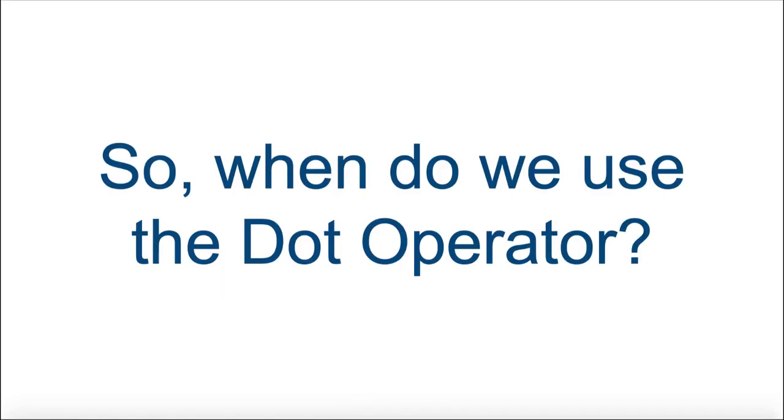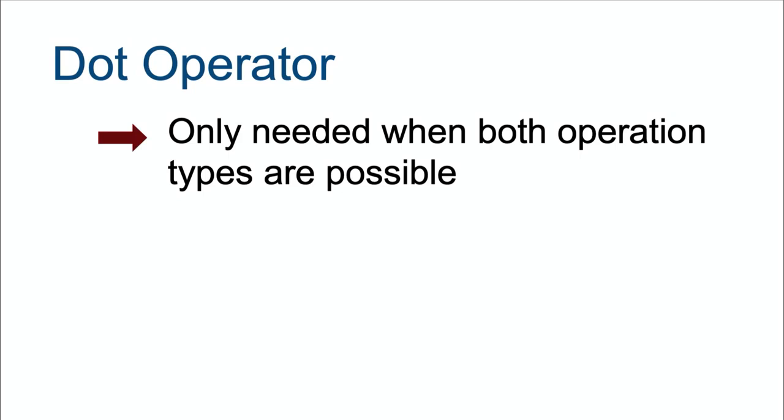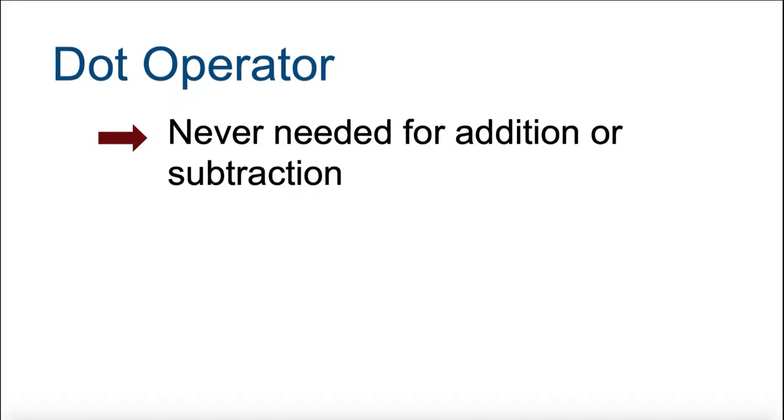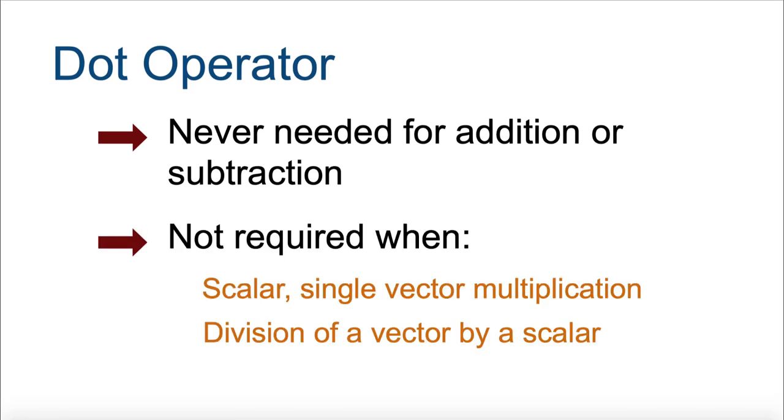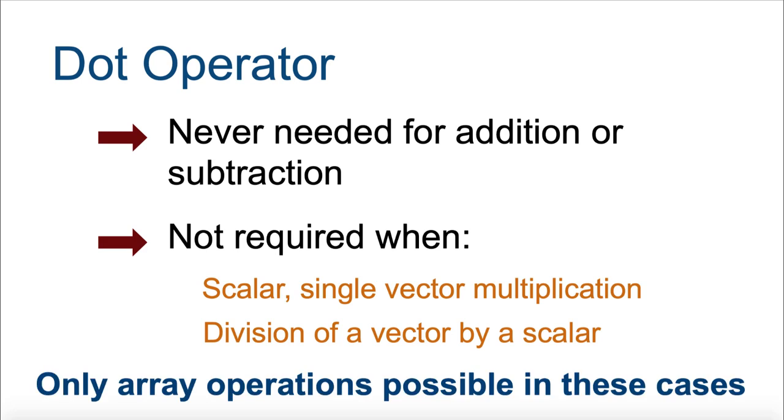So, when do we use the dot operator? Well, since it is only used when both array and matrix operations are possible, the dot operator is never required for addition or subtraction. It is also not required for any scalar singular vector multiplication or division of a vector by a scalar, since there is only one mathematical outcome in each case, array operations.